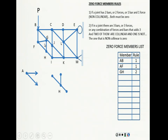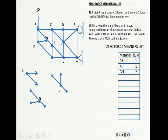I'm going to take that element out of the drawing and keep going. Once GH is removed, we now have joint G with bars GJ and GB, making three bars total — two collinear and one not. The one that is not collinear, which is FG or GF, is zero. And that's rule number two.